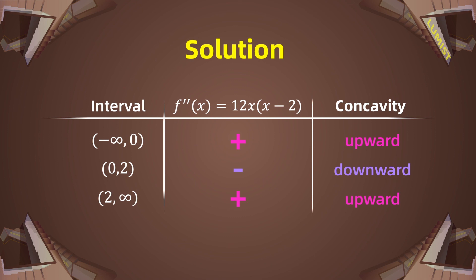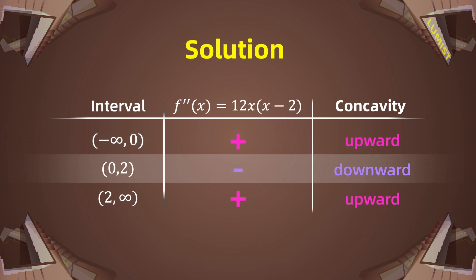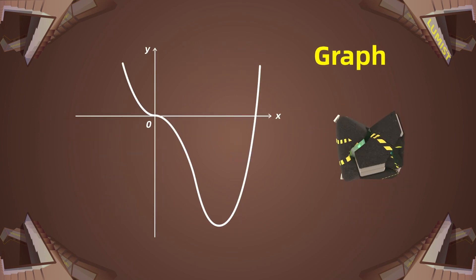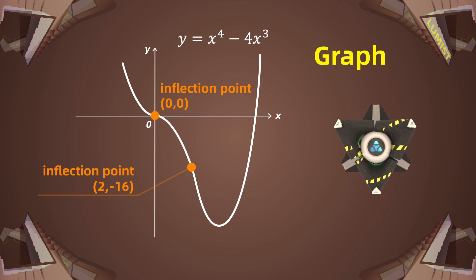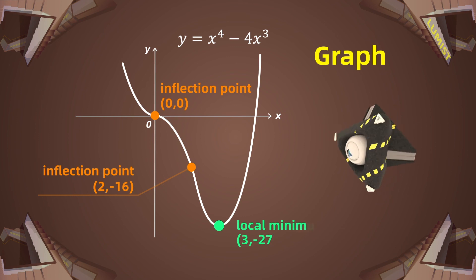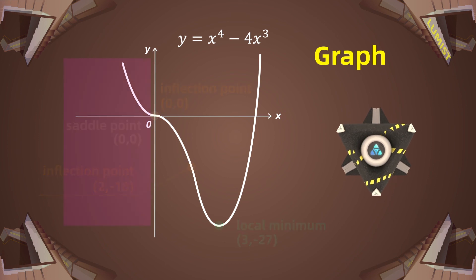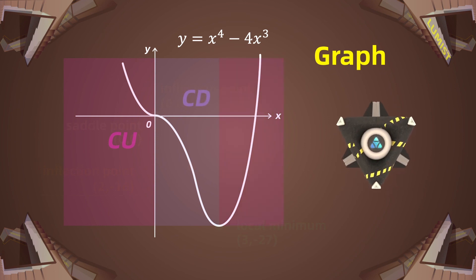From the table of the second derivative, the function on the interval negative infinity to 0 is concave up, the function on the interval 0 to 2 is concave down, and the function on the interval 2 to infinity is concave upwards. The graph shows two points of inflection at (0, 0) and (2, -16), a local minimum at (3, -27), and a saddle point at (0, 0). The concavity goes from concave up on negative infinity to 0, concave down on 0 to 2, and concave up from 2 to positive infinity.